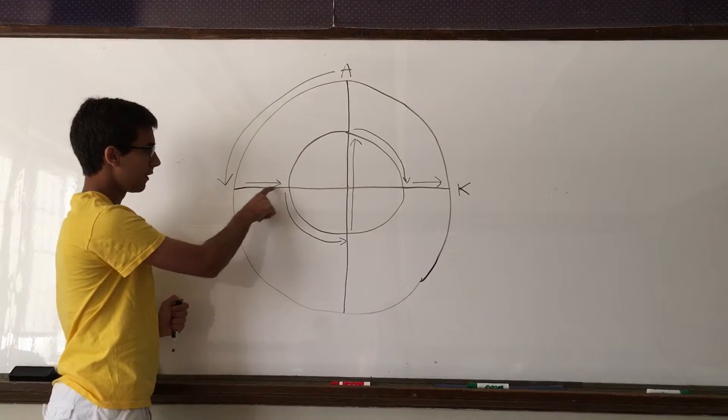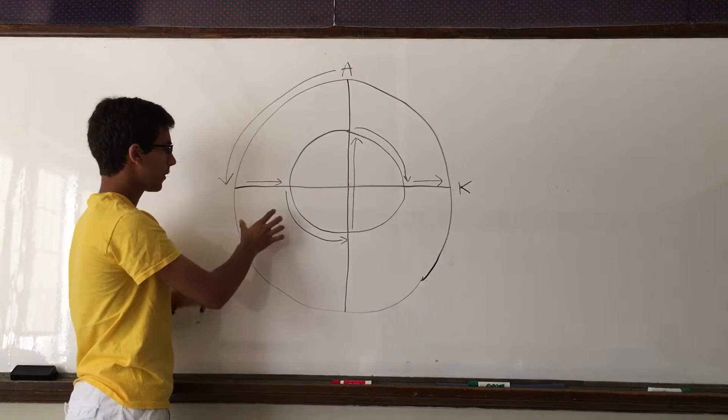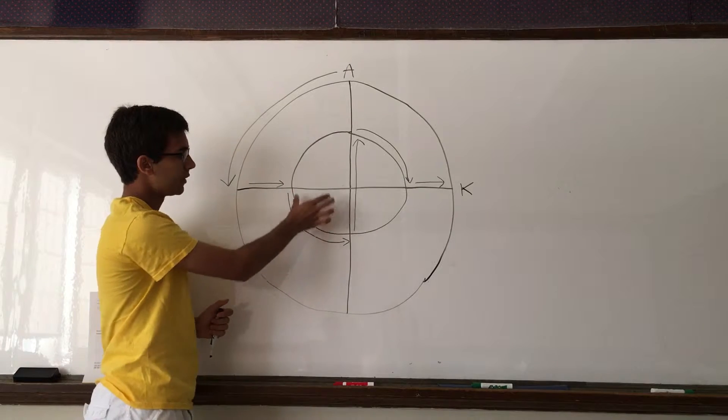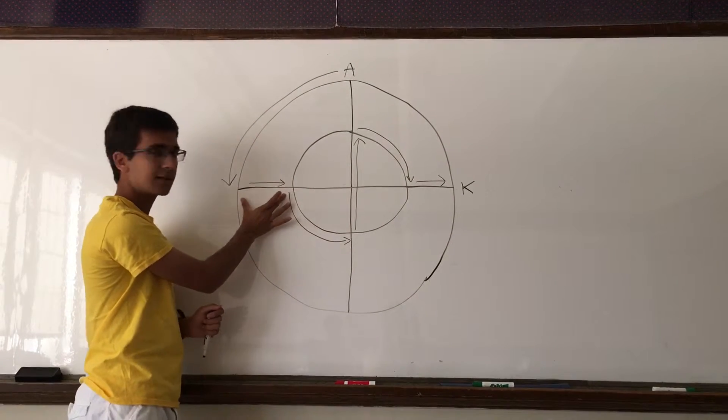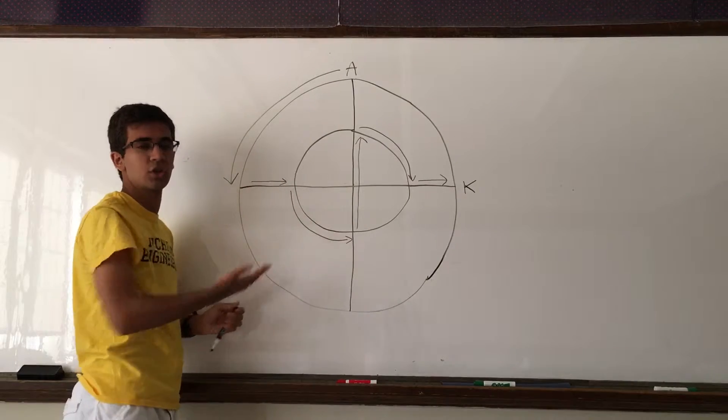Now we look at this arrow. This part goes from the outer circle to the inner circle. If the inner circle has a radius of 10 and the outer circle has a radius of 20, this distance must be 20 minus 10, which is just 10.